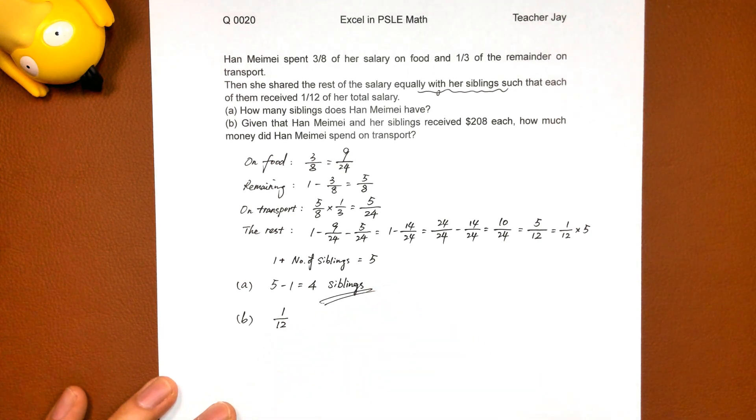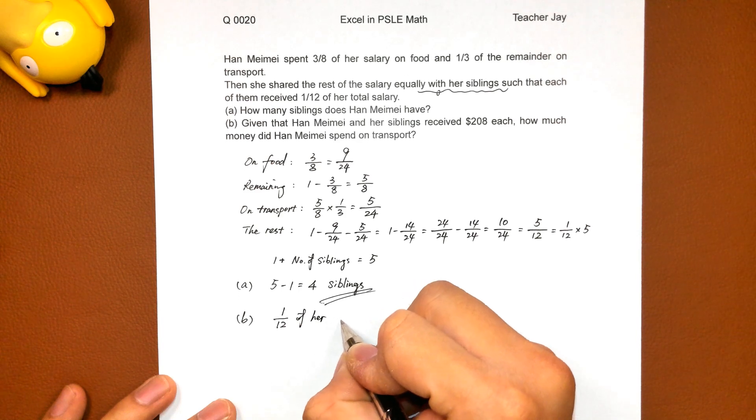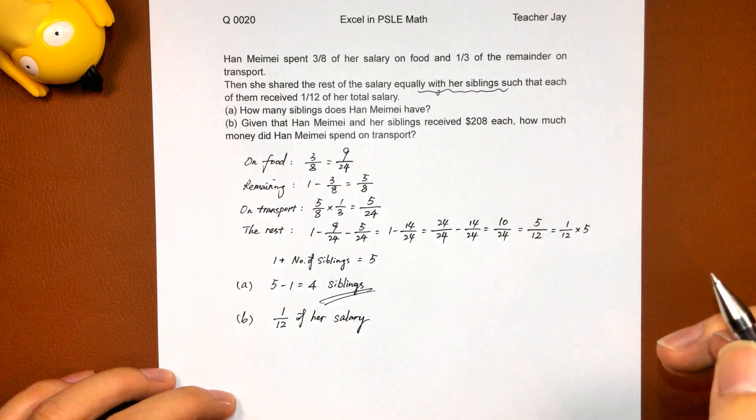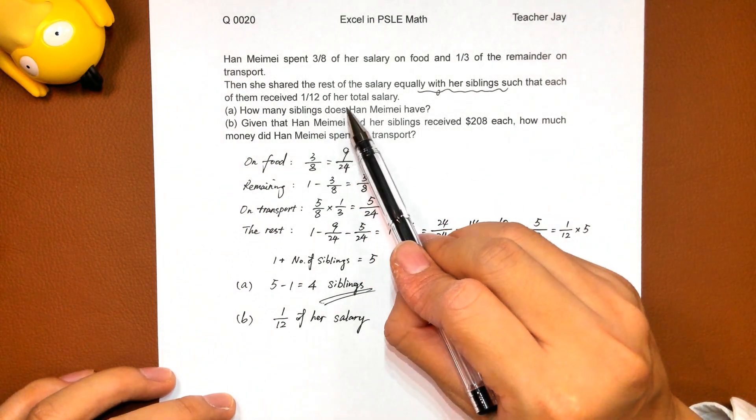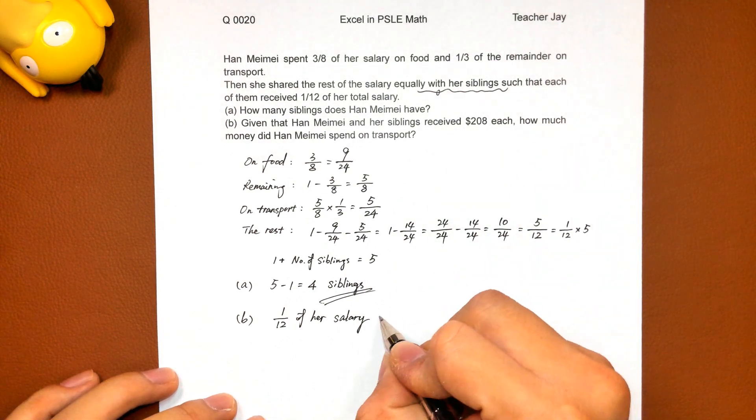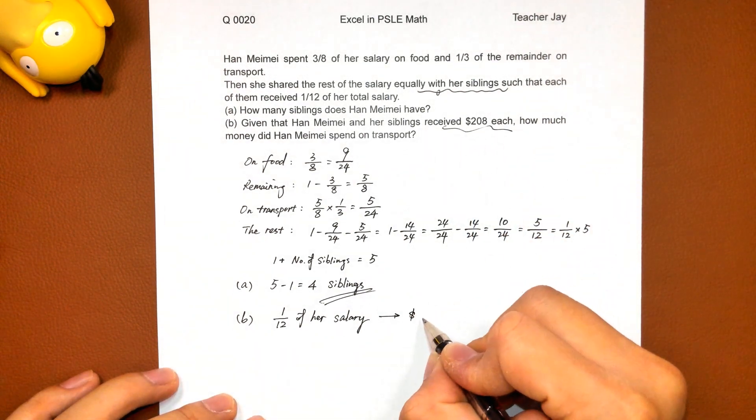If one over twelve of her salary, because one over twelve of her salary received by each of them, each of them receive two hundred and eight dollars.